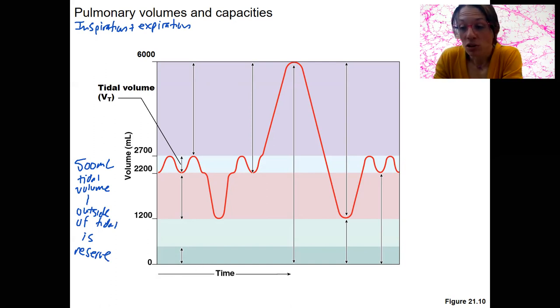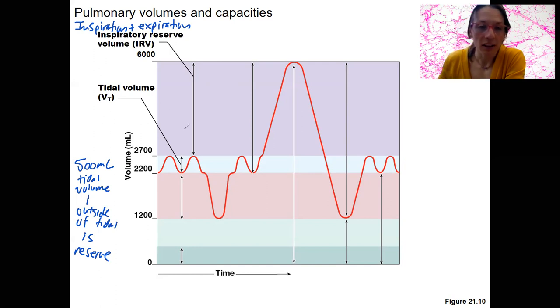There's an inspiratory reserve volume up here. This would be the volume inhaled up this way. So right here is inspiratory reserve volume, and then tidal volume, the amount you can inspire by using those accessory muscles.